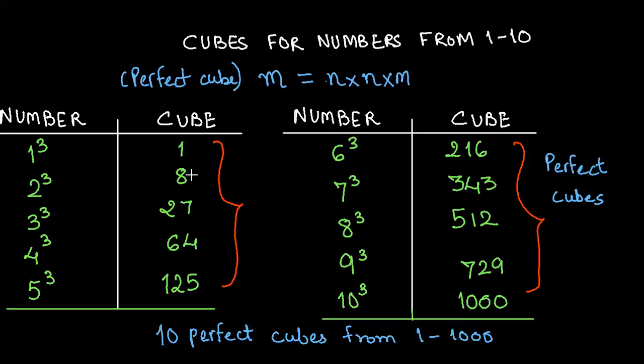The other thing to look out for is the unique patterns. So if you look at 1 cube, the digit in the unit's place is one. For two it is eight, for three it is seven, for four it is four, for five it is five, six it is six, for seven the unit digit is three, for eight the unit digit is two, for nine it is nine and for ten it is zero.